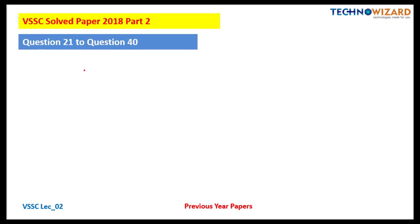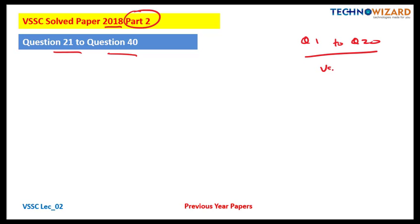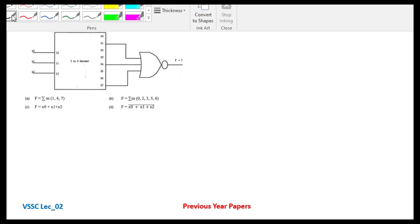Hello friends, welcome to Gnizar. This is Rohit Sharma, very good evening to all of you. Today we are going to solve VSST 2018 paper part two, in which question number 21 to question number 40 is involved. In the previous video I solved question number 1 to 20. This is the second part covering questions 21 to 40. After this, two more parts will cover questions 41 to 60 and 61 to 80. So let's start with question number 21.